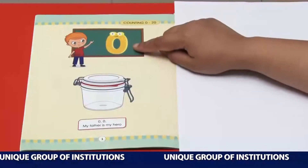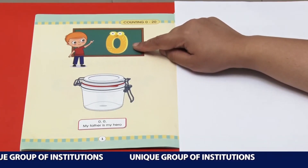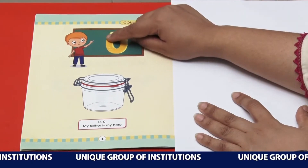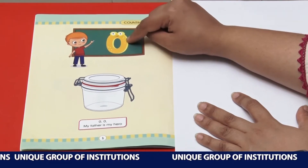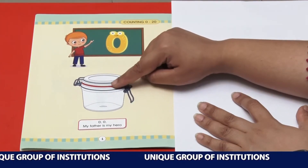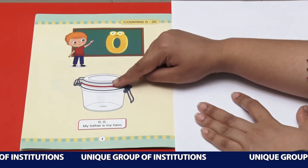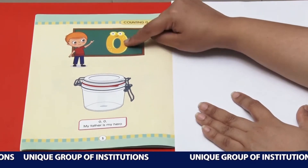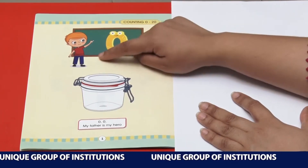I have given you the introduction of number 0, and now it's time to do the reading of number 0. Start from the top, run down, turn around, come down, touch the ground, go up and close — it becomes 0. When there is no thing, that means there are 0 things. 0 means nothing. The name of this number is 0.